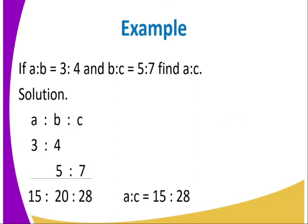For A: multiply 3 by 5 to get 15. For B: multiply 4 by 5 to get 20, and multiply 5 by 4 to get 20. For C: multiply 7 by 4 to get 28. So our full ratio is 15 to 20 to 28. Taking the ratio of A to C, we get 15 to 28.